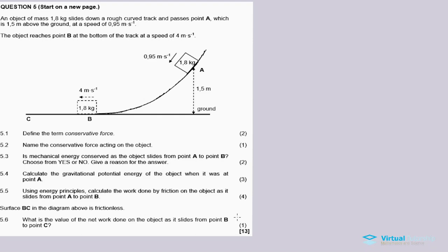Okay, work, energy and power - it's the topic for question five of this question paper, November 2018. In the description below you'll find my links for other questions for this same question paper. Now for question five: an object of mass 1.8 kilograms slides down a rough curved track and passes point A, which is 1.5 meters above the ground, at a speed of 0.95 meters per second. The object reaches point B at the bottom of the track at a speed of four meters per second.